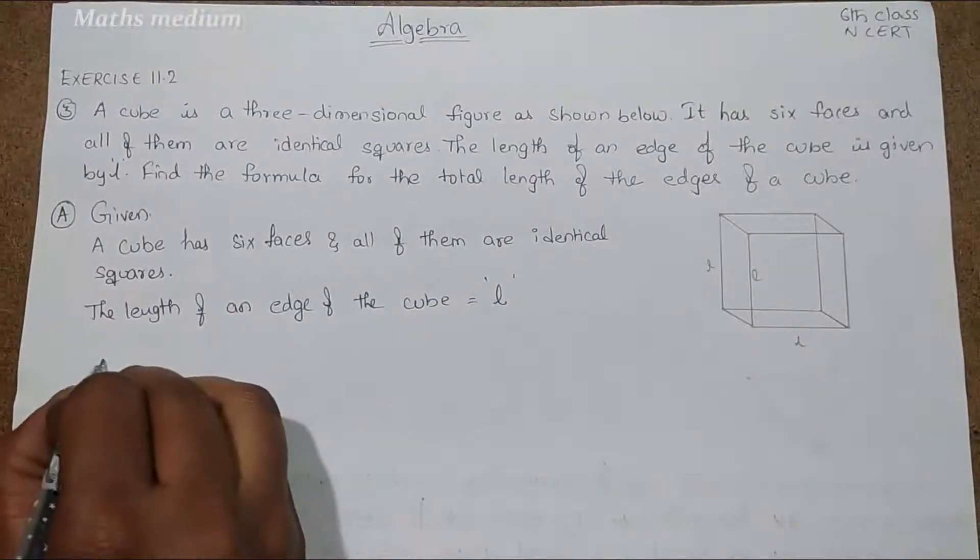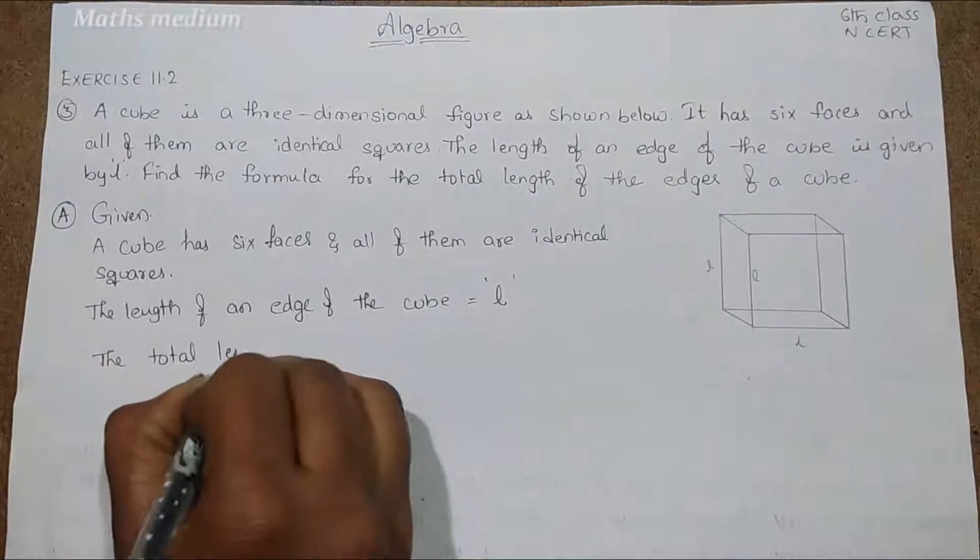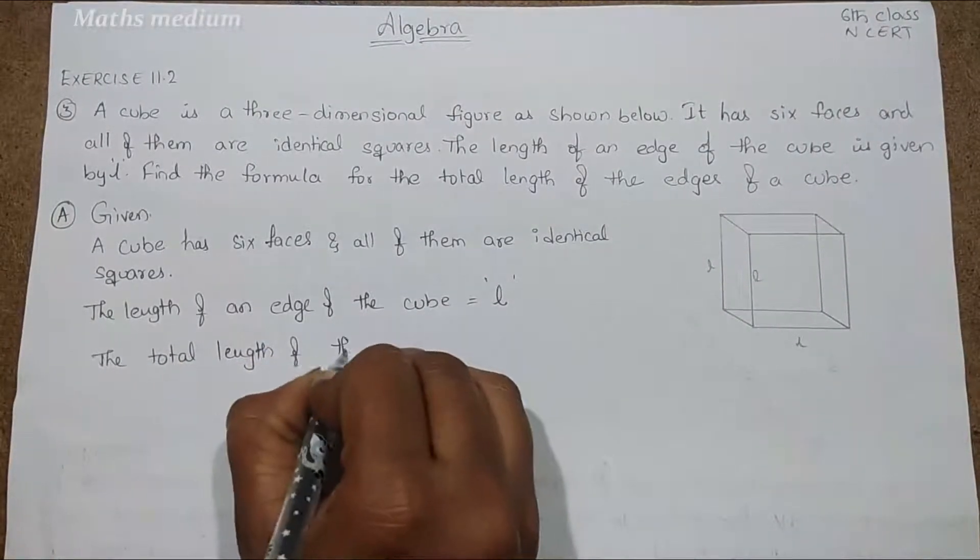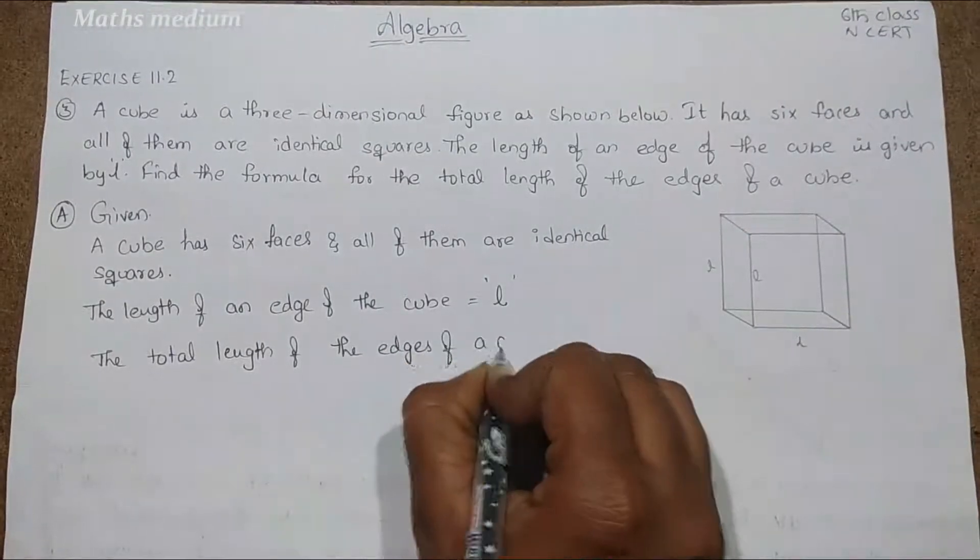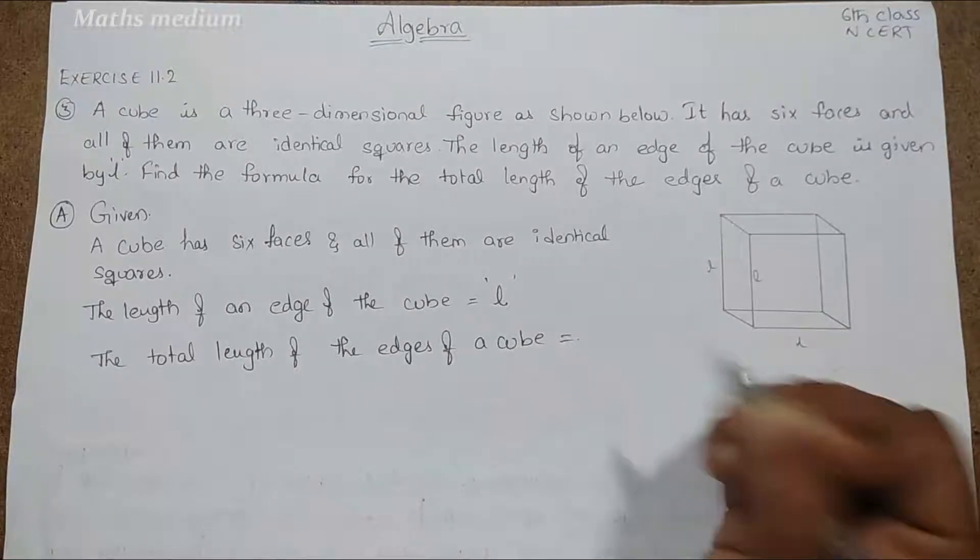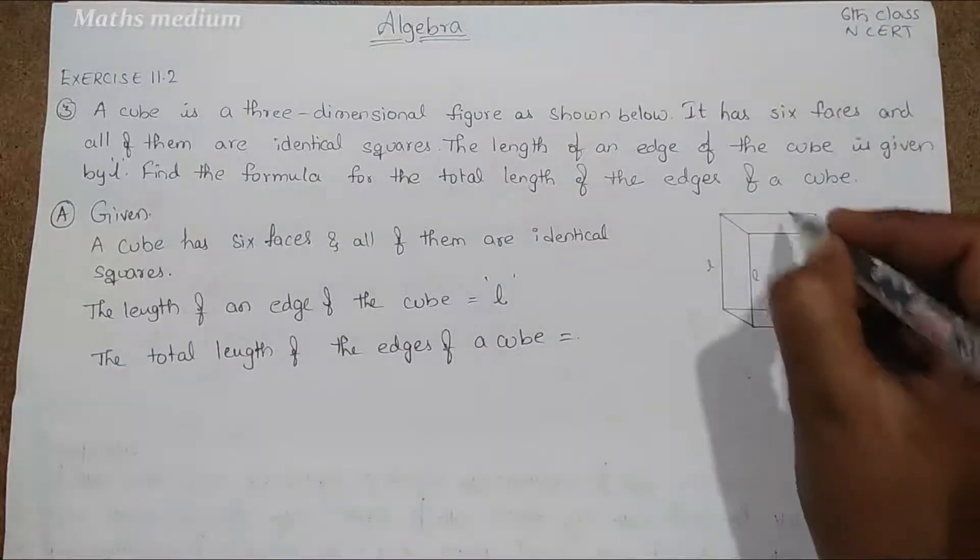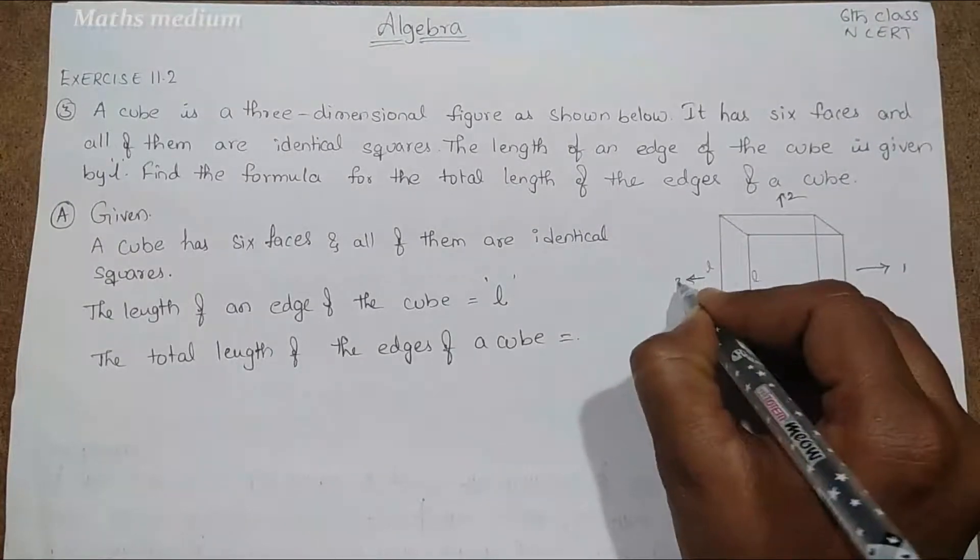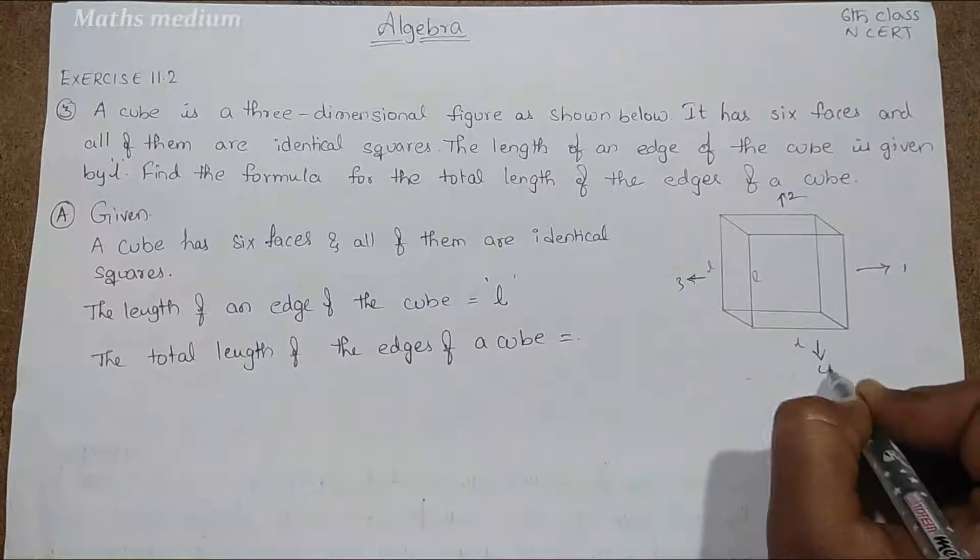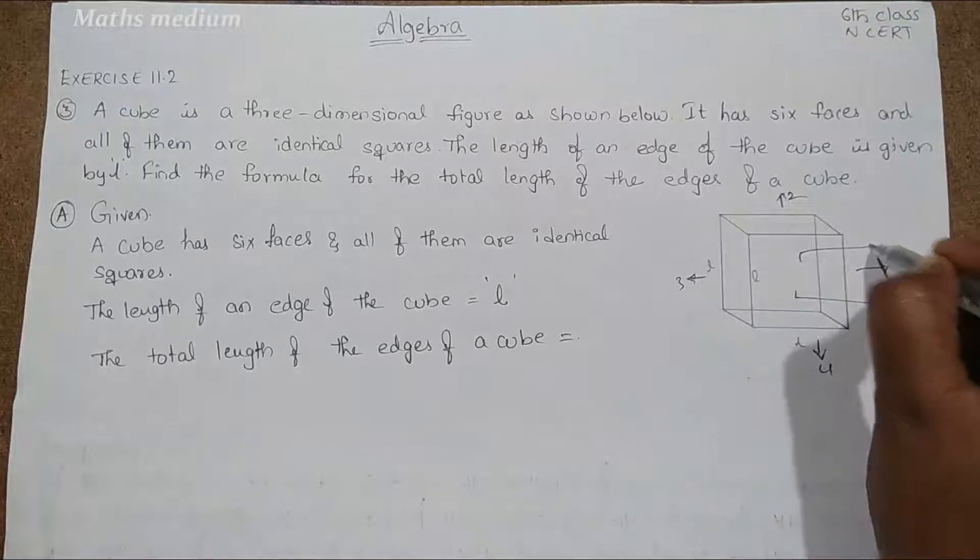Now, the total length of the edges of a cube. Here are six faces. See, this is 1, this is 2 and this is 3 and this is 4 and this side is 5 and back side is 6.